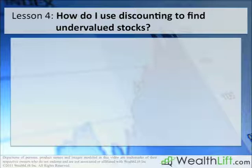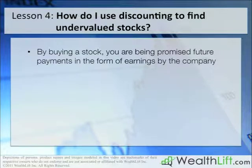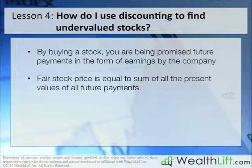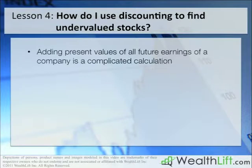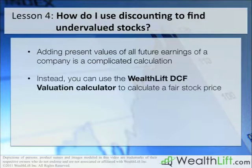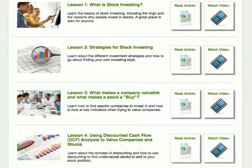How do I use discounting to find undervalued stocks? By buying a stock, you are essentially being promised a number of regular future payments in the form of earnings by the company. The stock price today can therefore be thought of as the sum of all the present values of all future payments. Using discounting of future earnings to price a stock is known as discounted cash flow analysis, or DCF. Rather than working through complex annuities formulas, you can simply use the WealthLift discounted cash flow stock valuation calculator, found on the article lesson page of WealthLift Lesson 4.